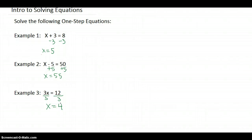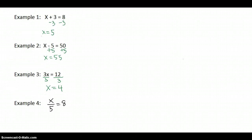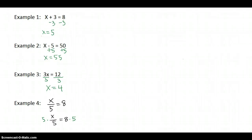What if I had division? Let's scroll down and look at example 4. What if I had x divided by 5 equals 8? What do I do there? The opposite of division is multiplication. You're going to multiply both sides by the 5. I'm going to choose the 5 because we want to get x alone. So x is equal to 40.